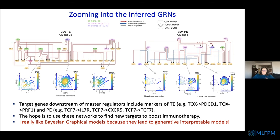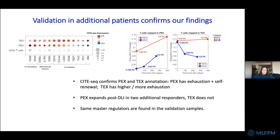I like Bayesian graphical models because they lead to generative, interpretable models. If we want to understand the biology, it's critical to be able to interpret things. We can look at a validation cohort and see the same trends in a completely new cohort — at the protein level, all the canonical markers that satisfied the immunologists were there. The populations we predicted should be expanding in responders again grew in a new cohort, and the same master regulators were found again, showing the robustness of the approach in a completely independent set of samples.